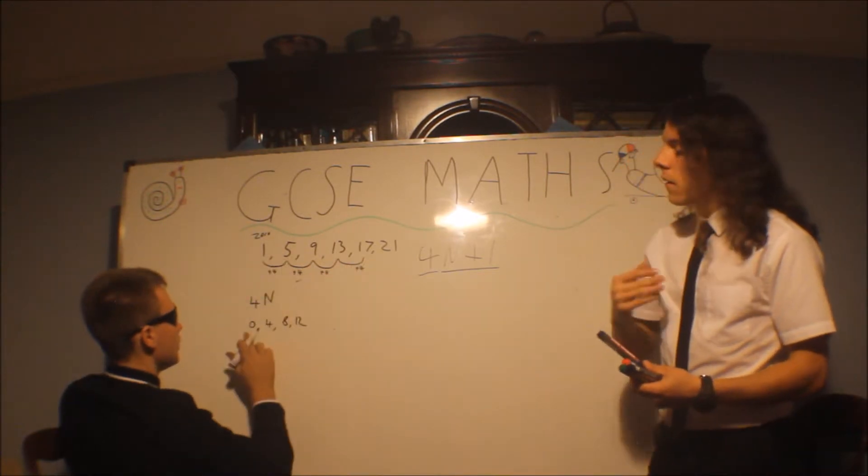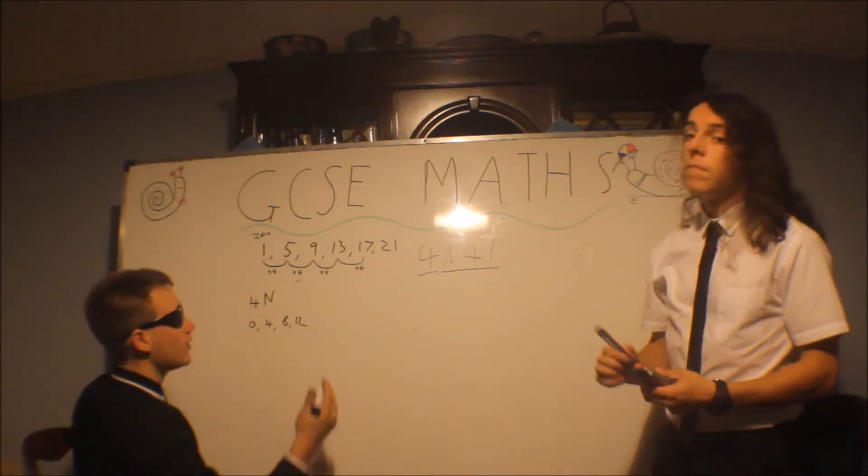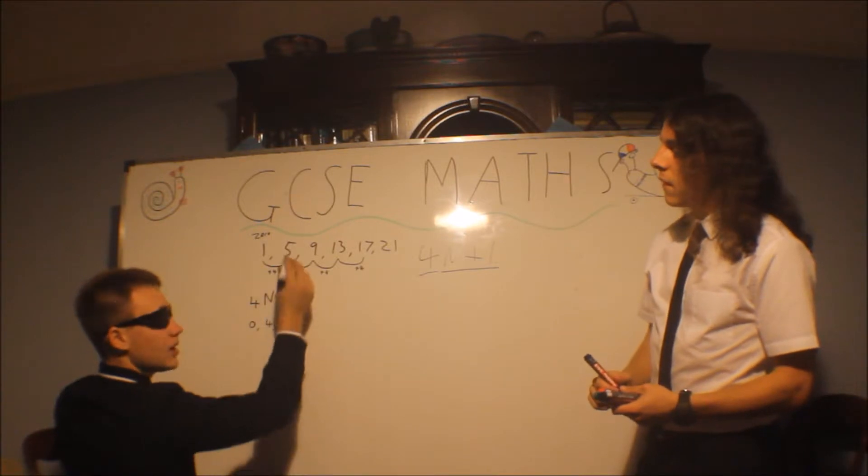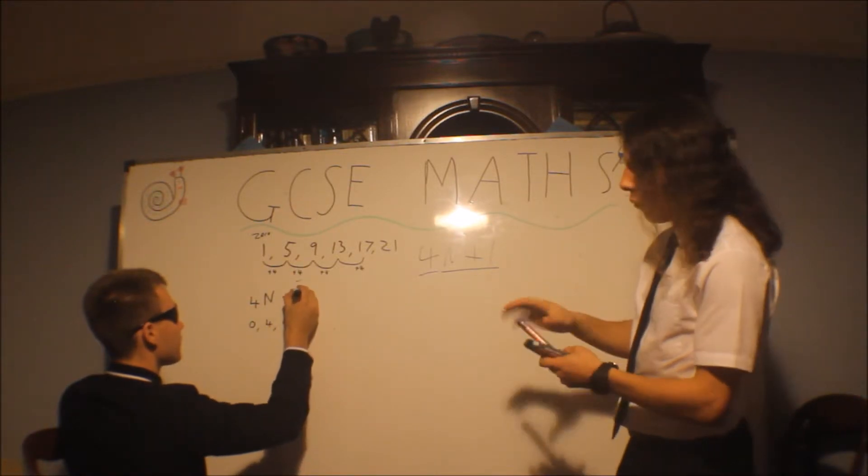Yep. So how has this been shifted from the 4 times table? Well, every value has been increased by 1. So that's where the 1 comes from.